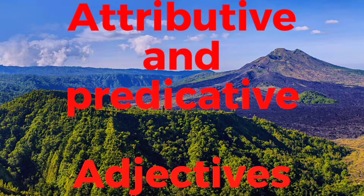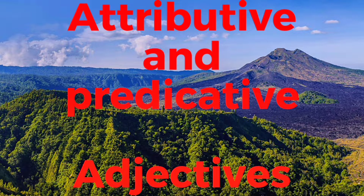Attributive and predicative adjectives. जब adjective को noun से पहले use किया जाता है तो उसे attributive adjective कहते हैं. Predicative adjective comes after the verb 'be' or verbs like feel, become and seem.